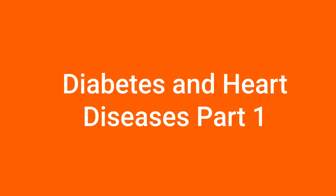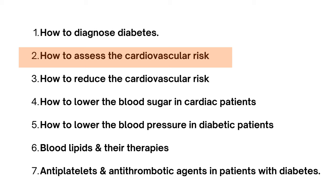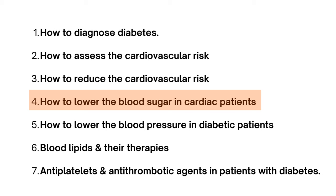Today, we will go through seven points: how to diagnose diabetes, how to assess the cardiovascular risk, how to reduce the cardiovascular risk, how to lower the blood sugar in cardiac patients, how to lower the blood pressure in diabetic patients, blood lipids and their therapies, and anti-platelets and anti-thrombotic agents in patients with diabetes.